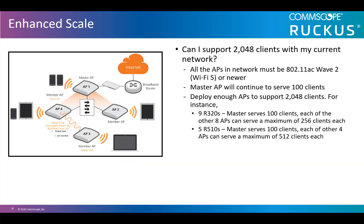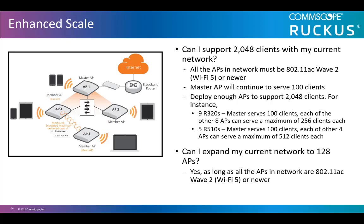Here we go into more detail on the enhanced scale. You can now support 2,048 clients with your current network. To do this, all the APs in the network must be 11AC Wave 2 or newer. The master AP will continue to serve 100 clients. For example, if you had 9 R320s, the master serves 100 clients and each of the other APs can serve a maximum of 256 clients. If you had 5 R10s, the master would serve 100 clients and each of the other 4 APs can serve a maximum of 512 clients. You can expand your current network to 128 APs as long as all the APs in the network are 11AC Wave 2 or newer.